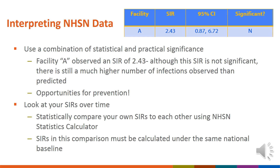Another way to examine practical significance is to look at your SIRs over time. Instead of comparing your SIRs to 1, you can use the NHSN Statistics Calculator Tool to statistically compare your current SIR to a past SIR. You can also look at your SIR values qualitatively over time. This may help identify glaring increases or decreases in your HAI incidence. If you do perform this comparison over time, it is very important that both SIRs were calculated under the same national baseline.